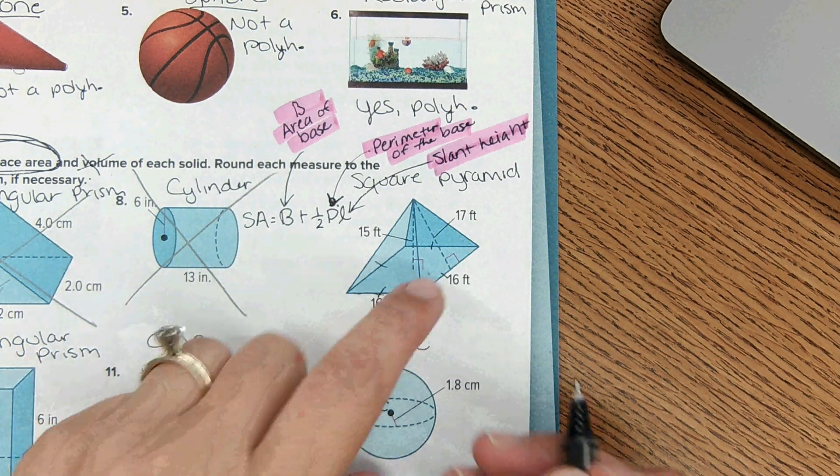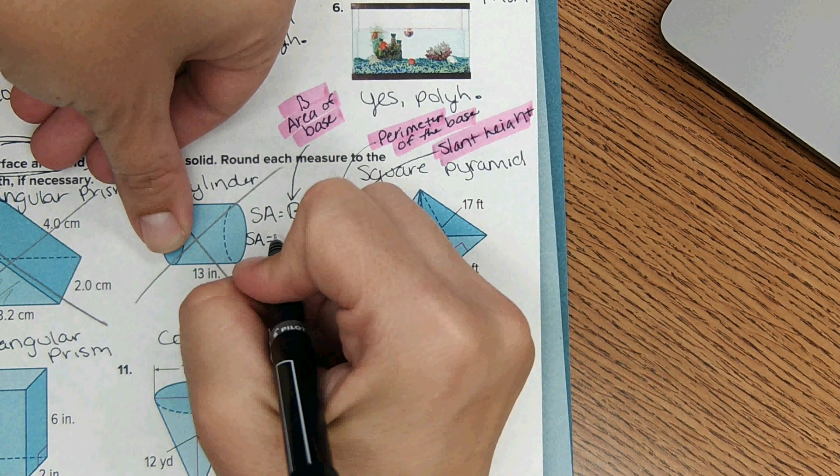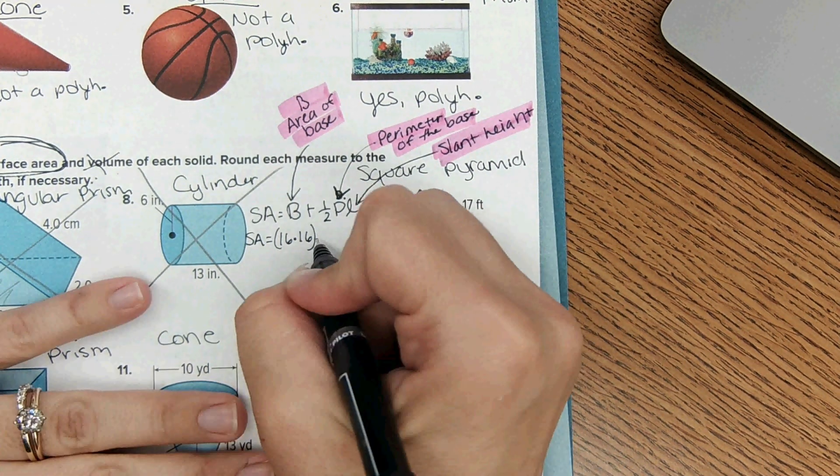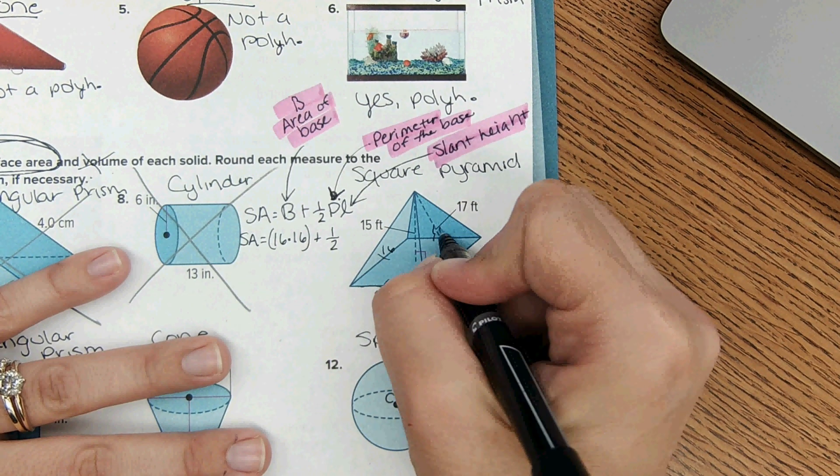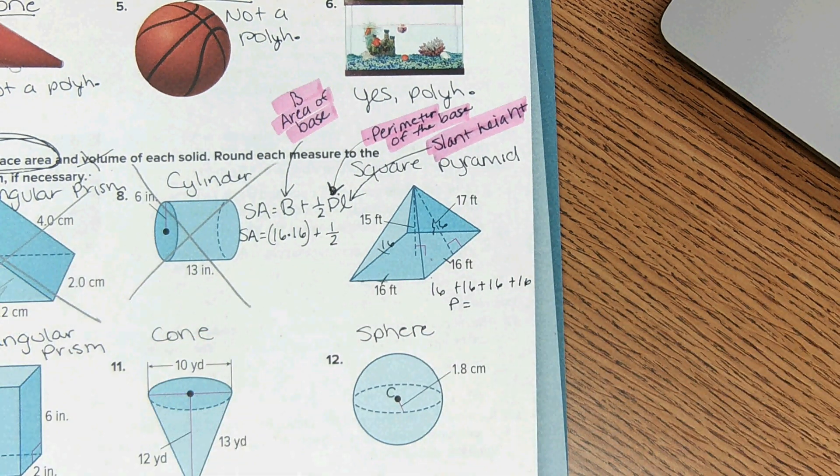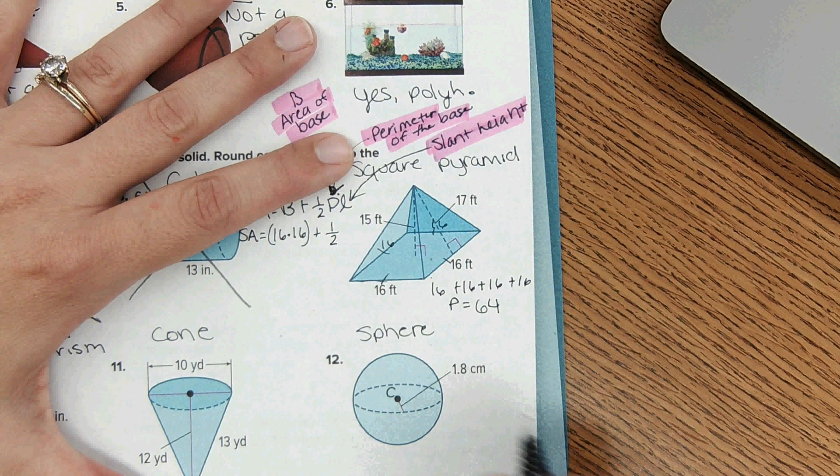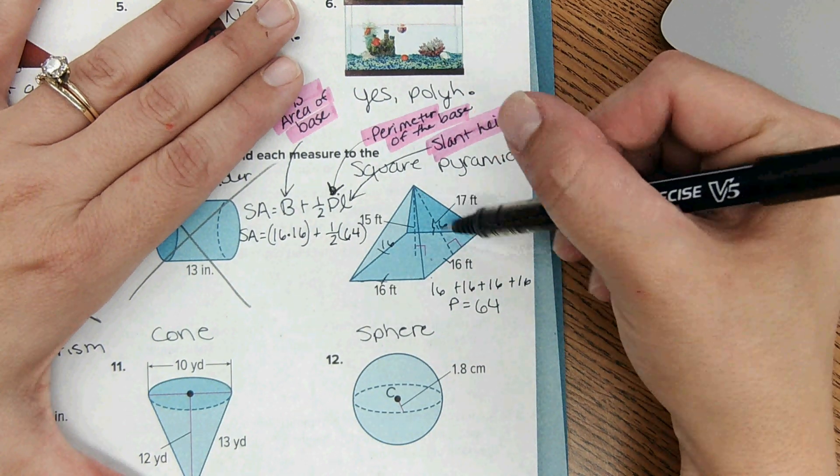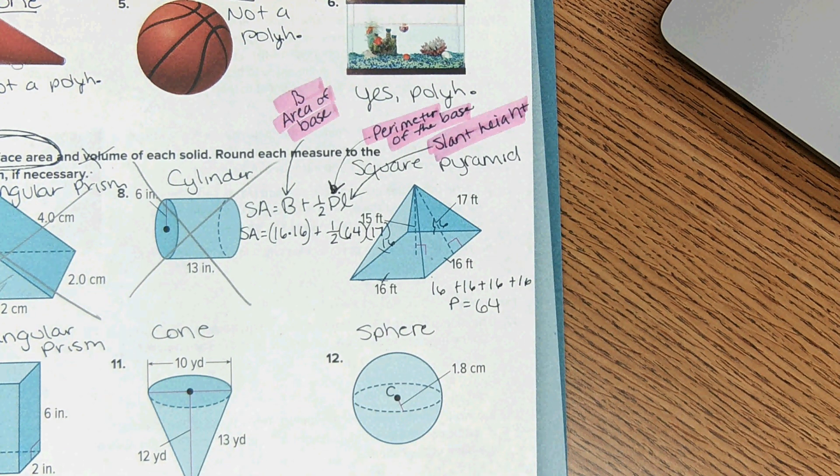Okay, so if we know that then we can plug numbers into the equation. So surface area equals area of the base - it's a square so it'll be 16 times 16 - plus one half, perimeter of the base. So the base right here would be 16 by 16, 16, 16, 16. So 16 plus 16 plus 16 plus 16, the perimeter equals, I believe it comes out to 64. 16 times 4 is 64. So in here we'll put 64. And then slant height - it labels it as 17.